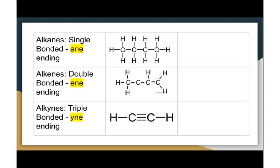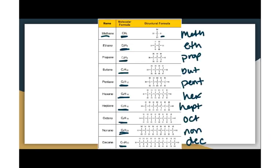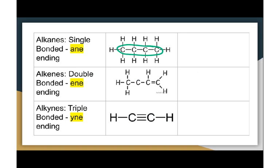I'm going to show you how to use those. If they're all single bonds — notice in this first example they're all single bonds between the carbons. The hydrogens don't matter. My longest chain has four carbons, so that is butte. And because they're all singly bonded, I end it with the ending -ane. So butane is the name of that compound.